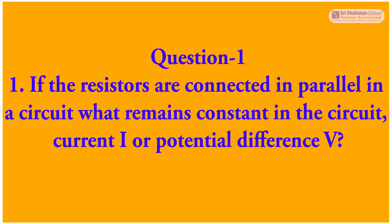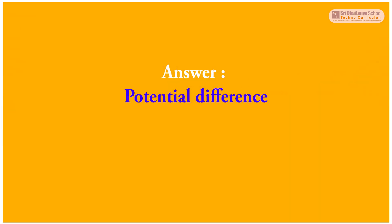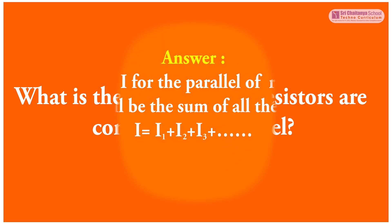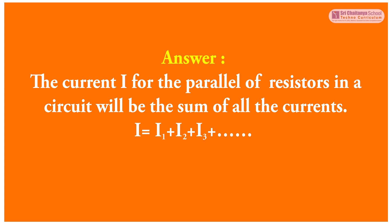Based on this experiment I will ask a few questions. The first question is: if the resistors are connected in parallel in a circuit, what remains constant — current I or potential difference V? The answer is potential difference. The second question is: what is the current when resistors are connected in parallel? The answer is the total current I is equal to I1 plus I2 plus I3 and so on.